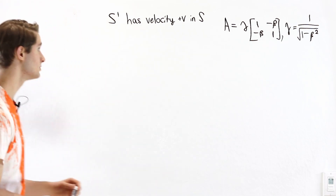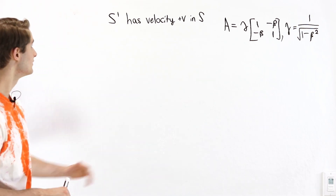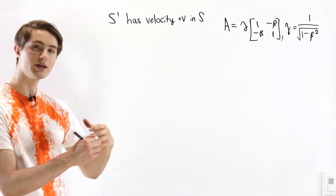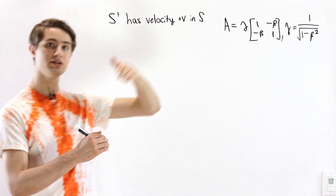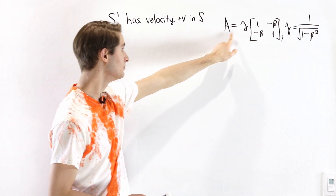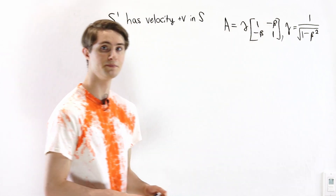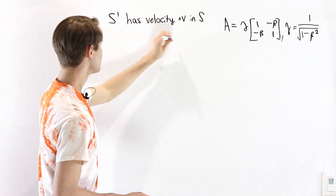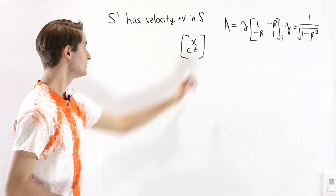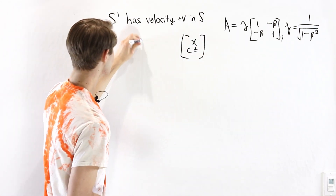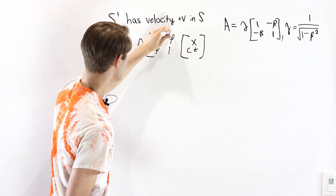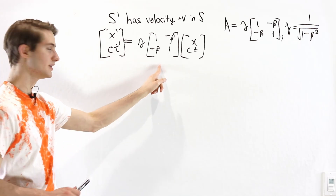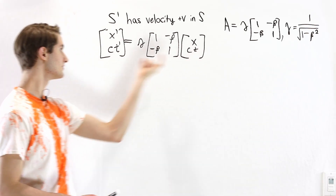You can check the video in the description where we derive, using a few basic physical assumptions, that if we have some inertial reference frame S' which moves with a velocity v in the reference frame S, then if we want to transform from the coordinates of S to S', we can do that using a matrix A, which is gamma times 1, minus beta, minus beta, 1. Beta is defined to be equal to v over c. So if we have some coordinates X, CT in reference frame S, we multiply by that matrix to get the coordinates in reference frame S'.